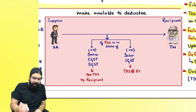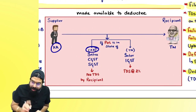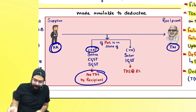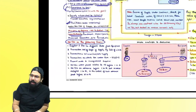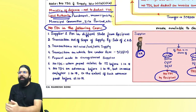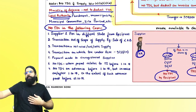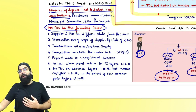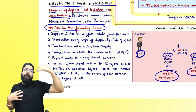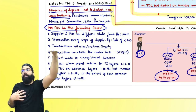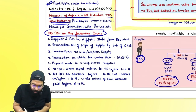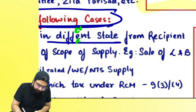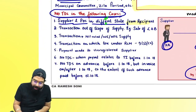Scenarios when TDS is not required: If the supplier and place of supply are in the same state but the recipient is in a different state, no TDS is required. If the supply and place of supply are in one state and the recipient is in another state, IGST is charged and 2% IGST TDS is deducted. If supplier, place of supply, and recipient are all in the same state, CGST and SGST apply — 1% CGST and 1% SGST are deducted. No TDS if supplier and place of supply are in one state but the recipient is in a different state.